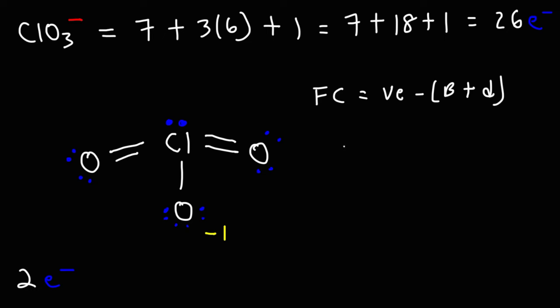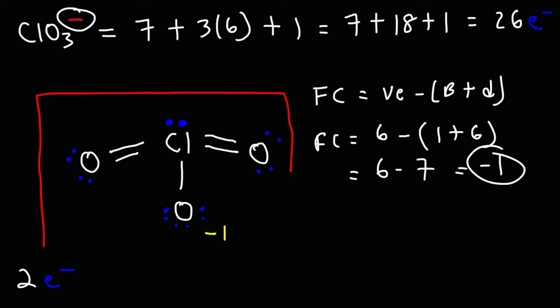So to confirm the negative charge, we could use the formal charge equation. The valence electrons of oxygen is 6. In this structure, this oxygen has 1 bond, but it has 3 lone pairs, which is 6 dots. So it's 6 minus 7, thus we have a negative 1 formal charge. And so we can see why the overall charge on the chlorate polyatomic ion is minus 1, is because of this oxygen atom. So all the other atoms in that structure are neutral in charge. So this right here is the most stable Lewis structure that we can draw.